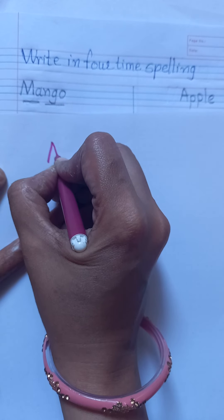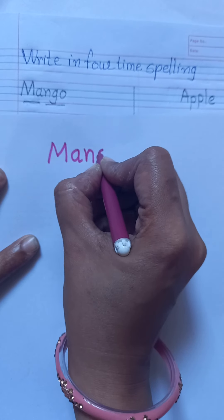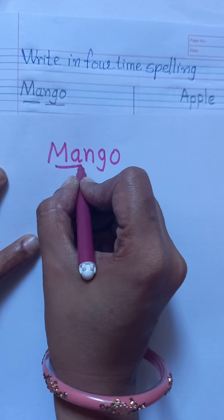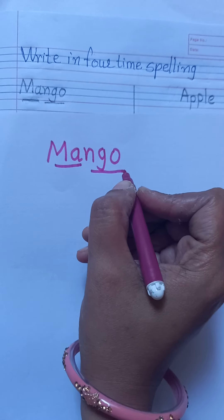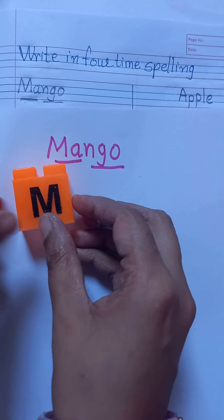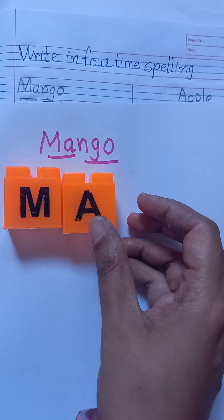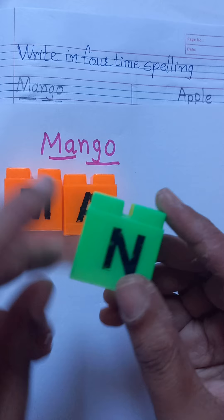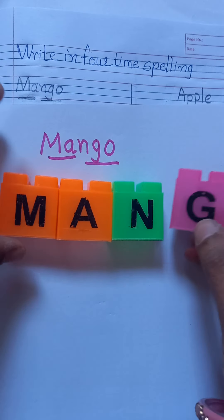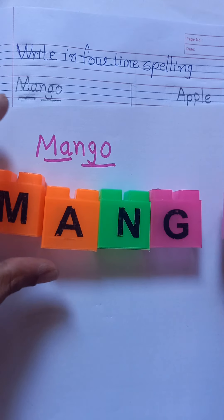M-A-N-G-O, Mango. M-A-N-G-O, Mango. Which letter is this? M. Which letter is this? A. Which letter is this? N. And which letter is this? G. And which letter is this? O.